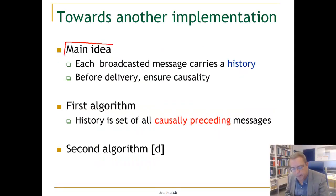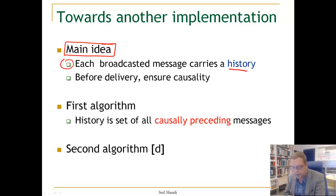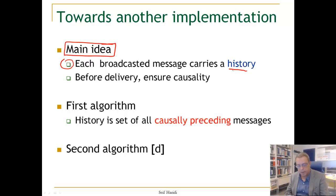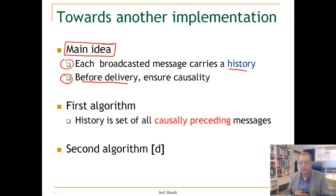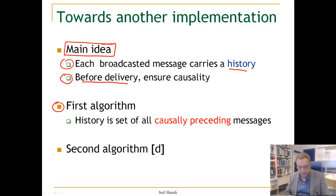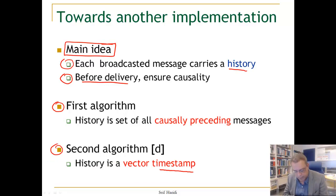Our main idea is that with each broadcasted message, we will carry a history — in this case, a very compact history. And before delivery of the message, we make sure that causality is enforced. In our first algorithm, the history was a set of all causally preceding messages. In this second algorithm, we are going to use a vector timestamp.